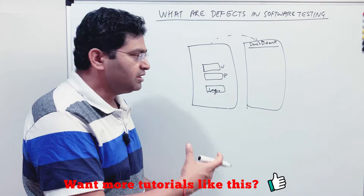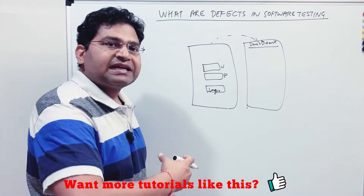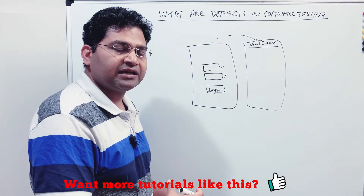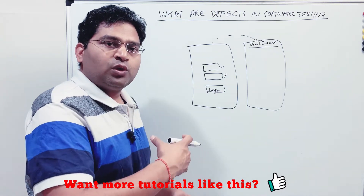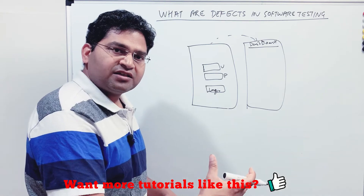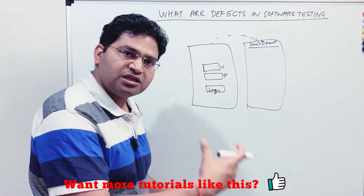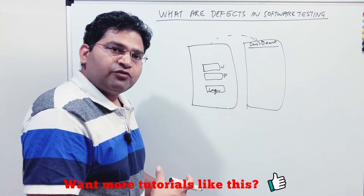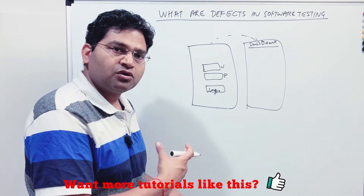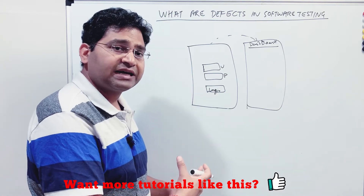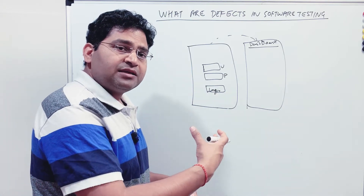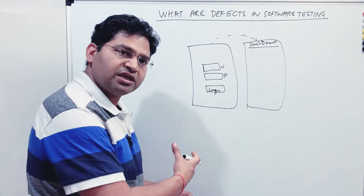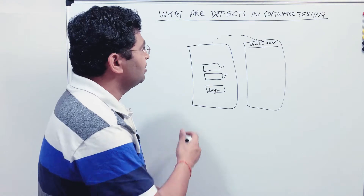Any deviation from the expected outcome is a defect in software testing. It can be found at any level — during functional testing, during acceptance testing, or even after production deployment. If the customer finds that the software results are not as expected as mentioned in the requirements, that deviation is also a defect and needs to be raised and fixed.